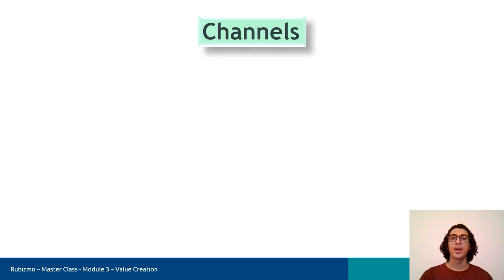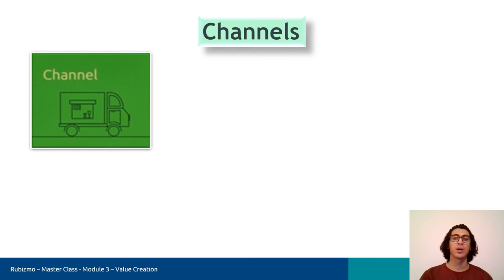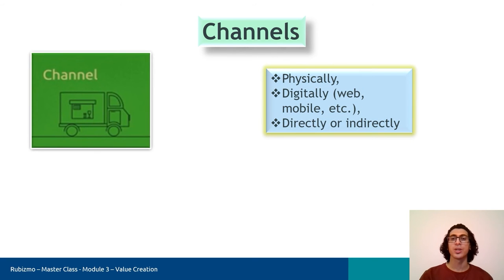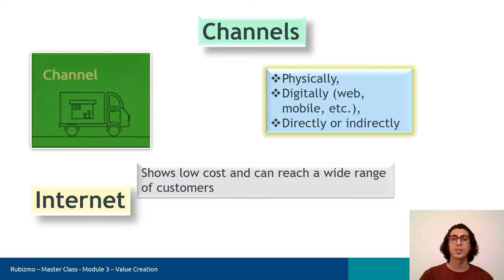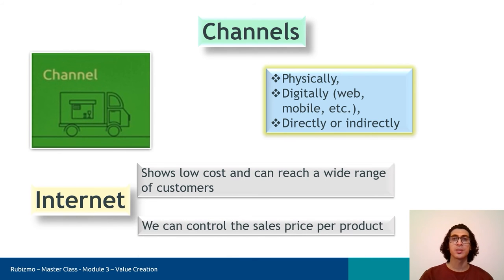Now that the value has been created, we need to know through which channels customers can reach it. A channel is an interface between a company and customer, and customers gain information about products or services through various channels. We can have different kinds of channels such as physical, digital, and even direct or indirect channels. In recent years, the internet has been an alternative to personal selling. It shows low cost and can reach a wide range of customers, and the benefit of using this kind of channel is that we can control the sales price per product.